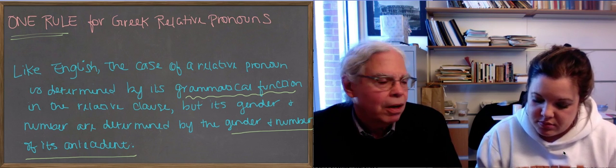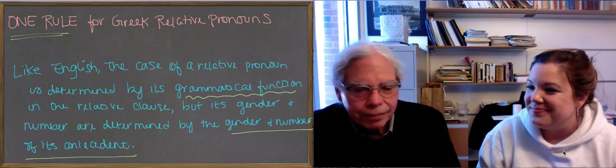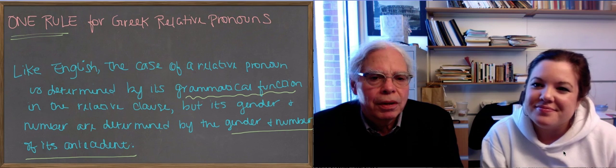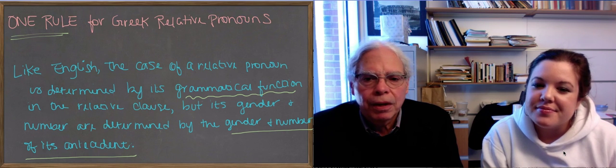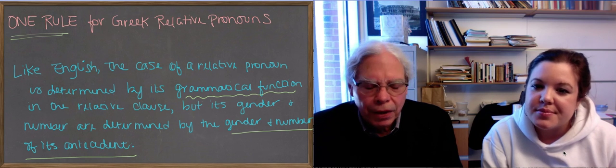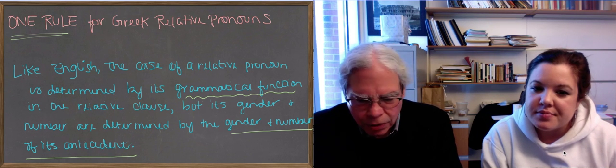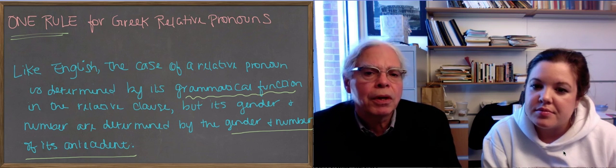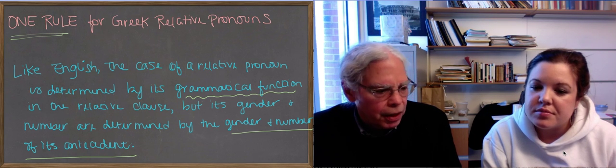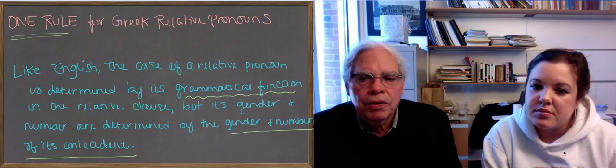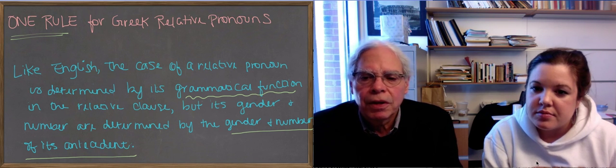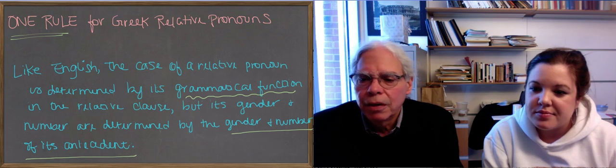There are cases in English sentences where you can't tell. So this is the basic idea we want to get across about how Greek relative pronouns work. That's the fundamental rule. The case of the relative pronoun is like English—it's determined by its function within the clause. But the gender and number are determined by the gender and number of the antecedent. We're going to have another video on the forms of the relative pronoun.